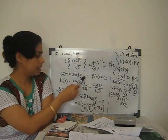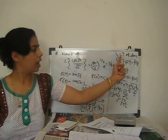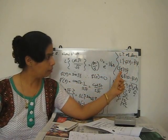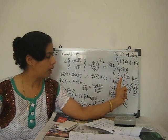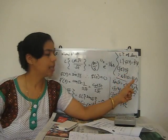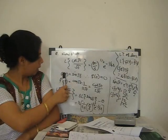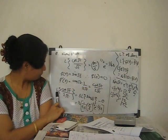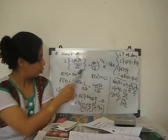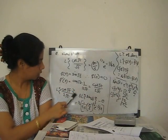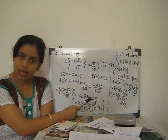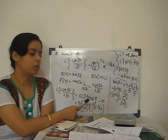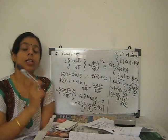Using the Laplace transform of derivative property: if L{f(t)} = F̄(s), then the Laplace transform of f'(t) is s·F̄(s) − f(0). Since f(0) = sin(0) = 0, we apply the property: L{cos√t / (2√t)} = s·F̄(s) − 0, where f(t) = sin√t.